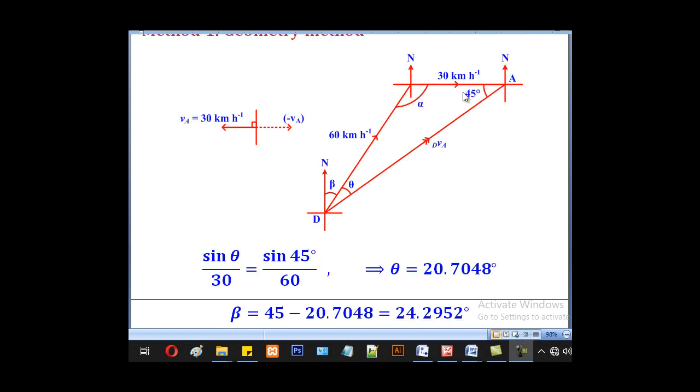Therefore, we shall use sine rule. This 45 corresponds to 60 and this corresponds to theta. So we shall say sine theta over 30 will equal sine 45 over 60. Therefore, we shall get our theta as 20.7048 degrees.